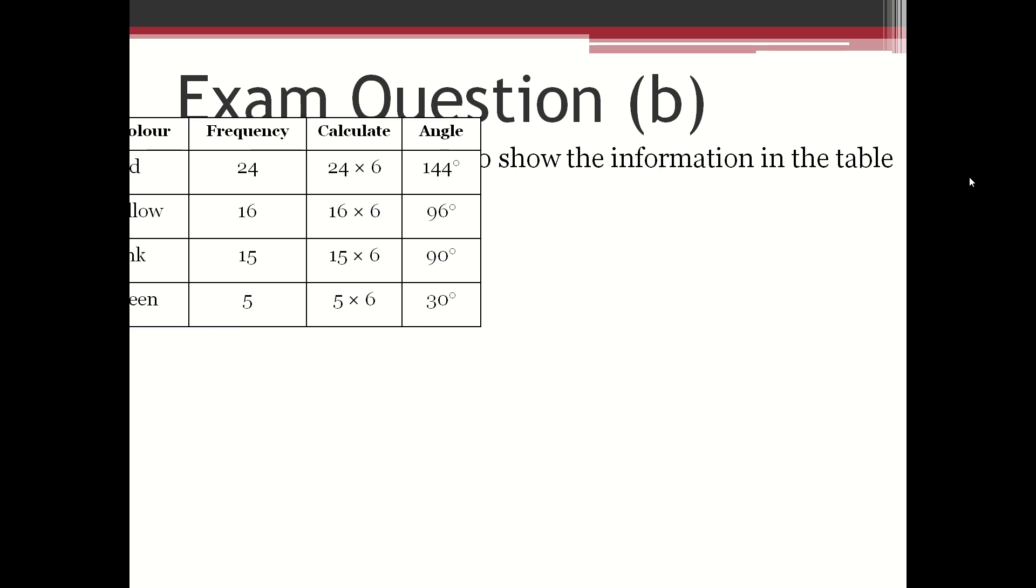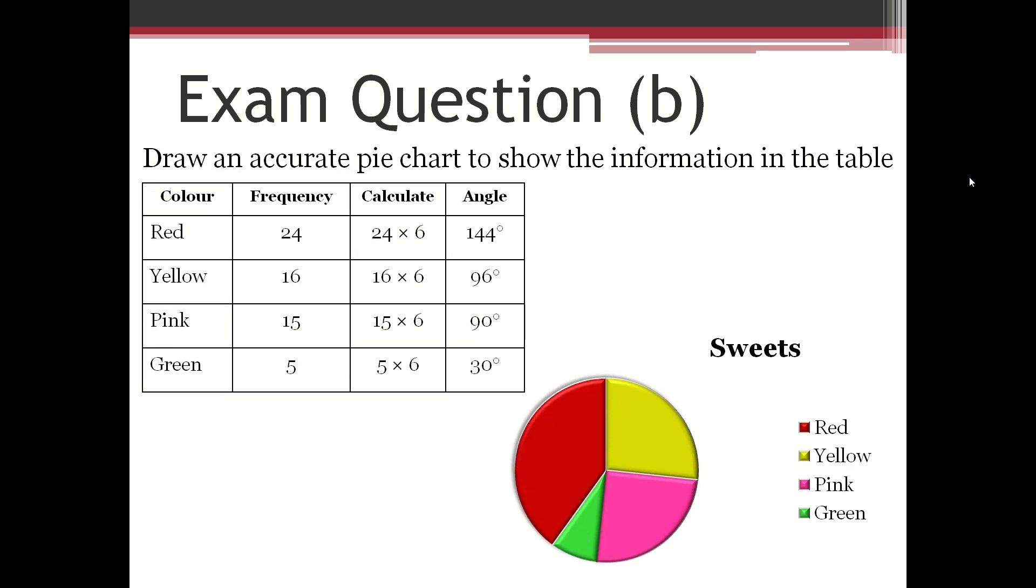From the table you can see the angles: red is the biggest with 144 degrees, yellow is slightly more than a quarter at 96 degrees, pink is a quarter at 90 degrees, and green takes the little space that's left at 30 degrees.